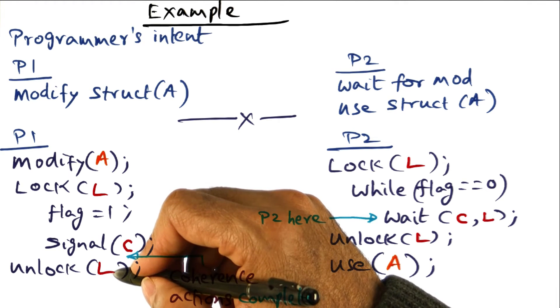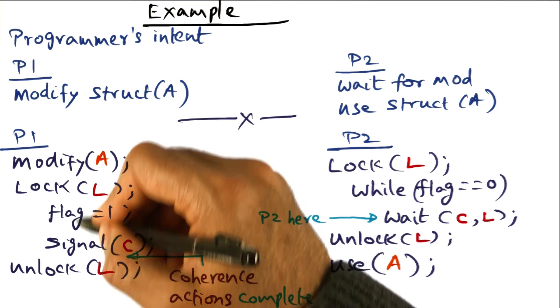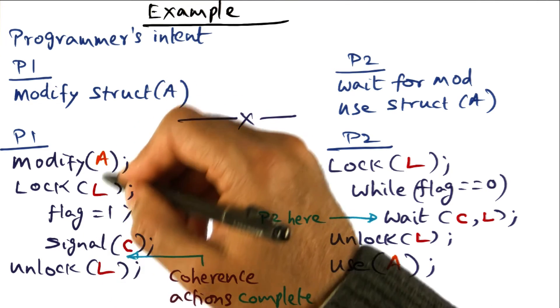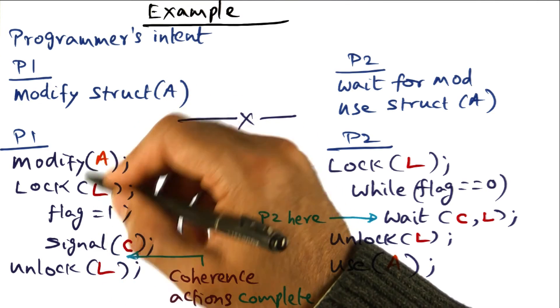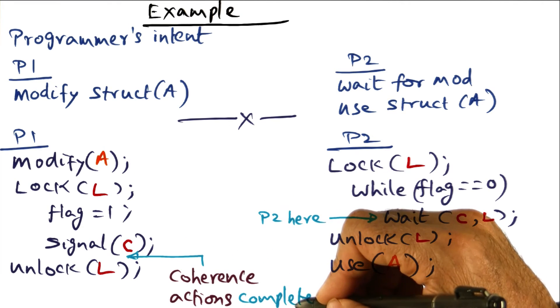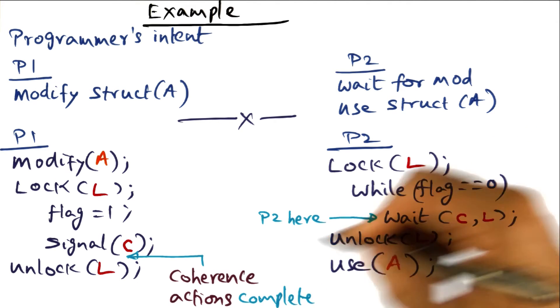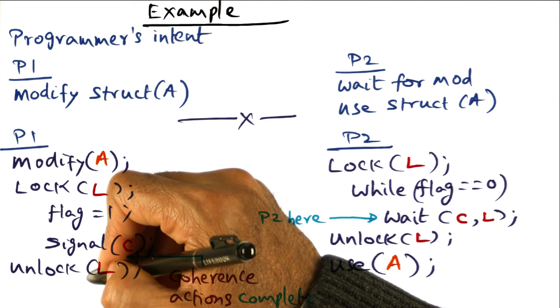So just before I unlock L, I have to make sure that all the read, write accesses to shared variables that I made here in my program have all been taken care of in terms of the coherence actions being communicated to all my peers, only then I have to unlock it.